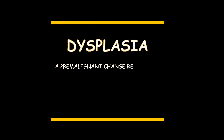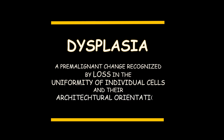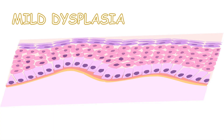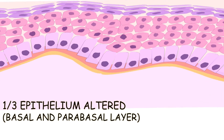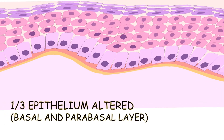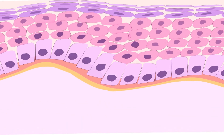Dysplasia is a pre-malignant change recognized by loss in the uniformity of individual cells and their architectural orientation. In mild dysplasia, one-third of the epithelium is altered, involving the basal and the parabasal cell layers.